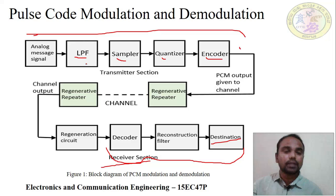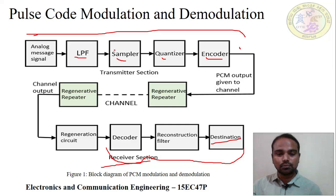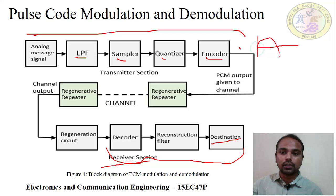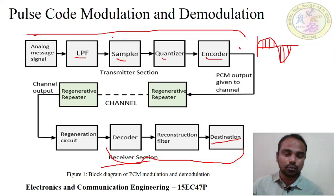Why do we filter it out? We filter out the higher frequency components to avoid the aliasing problem. In simple words, if we do not remove higher frequency components, they can cause aliasing. The sample and hold circuit then takes the instantaneous values of the analog signal — these particular instantaneous values are collected by the sampler and hold circuit.